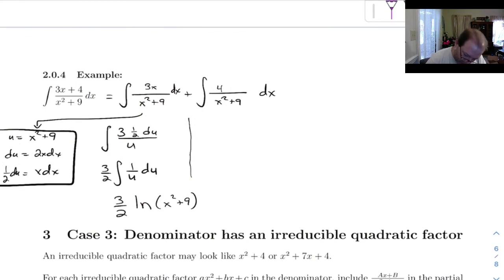Alright, so we've got the 4 hanging out front, and the formula tells us, let's see, 1 over a, a in this case is 3, and then inverse tan of x over a, so x over 3 plus c.